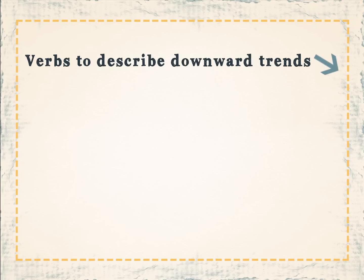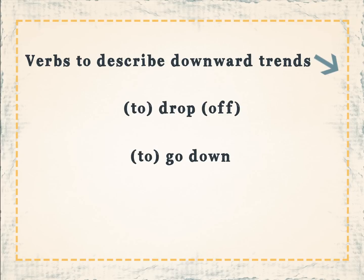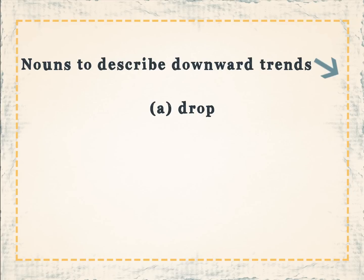Verbs to describe downward trends: to decrease, to reduce, to fall off, to drop off, to go down, or to decline. Some nouns to describe downward trends: a decrease, a plunge, a drop, and a decline.